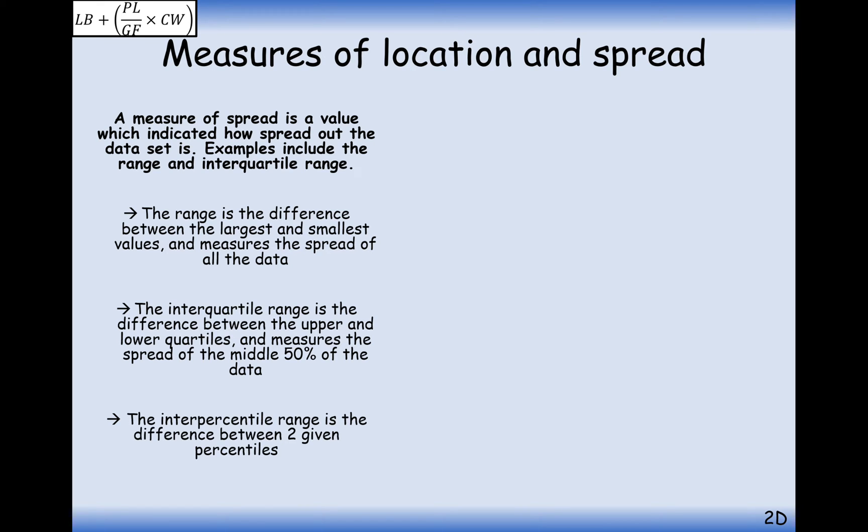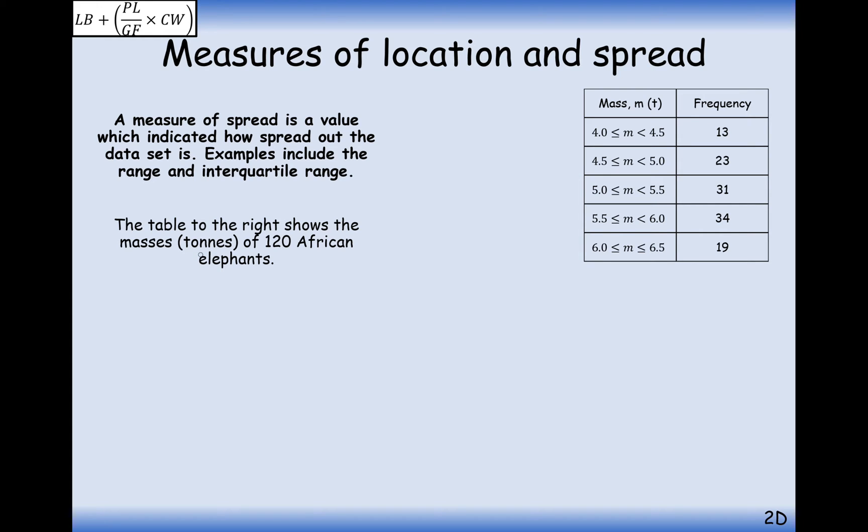And a new word for you here, the interpercentile range is the difference between two given percentiles. For example, the 20th percentile and the 80th percentile. So let's have a look at completing a question such as this. So the table on the right shows the mass of 120 African elephants. Find estimates for the range, the interquartile range and the 10th to the 90th interpercentile range.